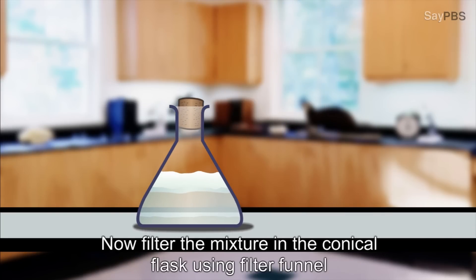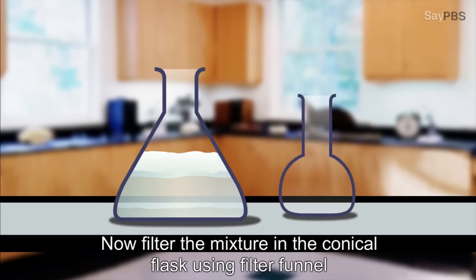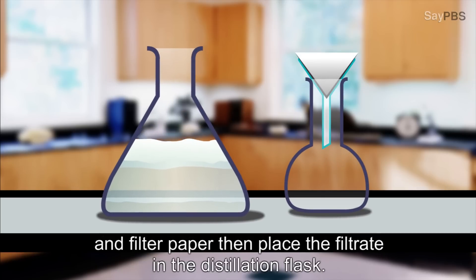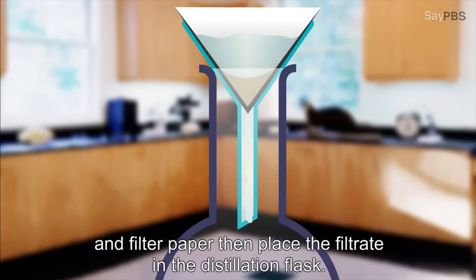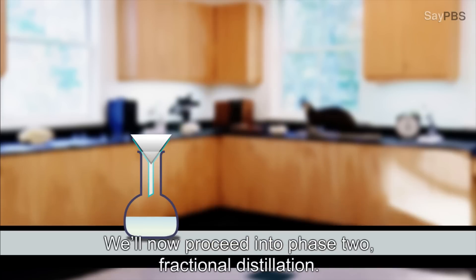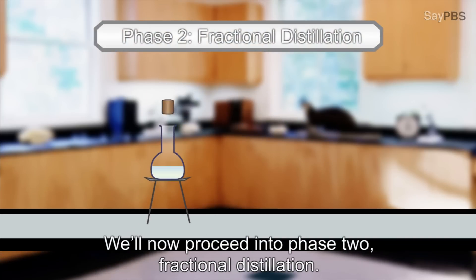Now, filter the mixture in the conical flask using filter funnel and filter paper, then place the filtrate in the distillation flask. We will now proceed into phase two, fractional distillation.